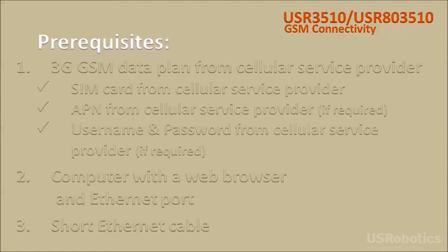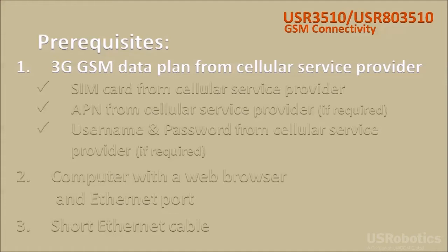First, there are a few requirements before you can get connected. You'll need to contact a cellular service provider for a subscription to a data plan on a 3G GSM cellular network. Ask your US Robotics sales representative if you need help finding a cellular service provider.